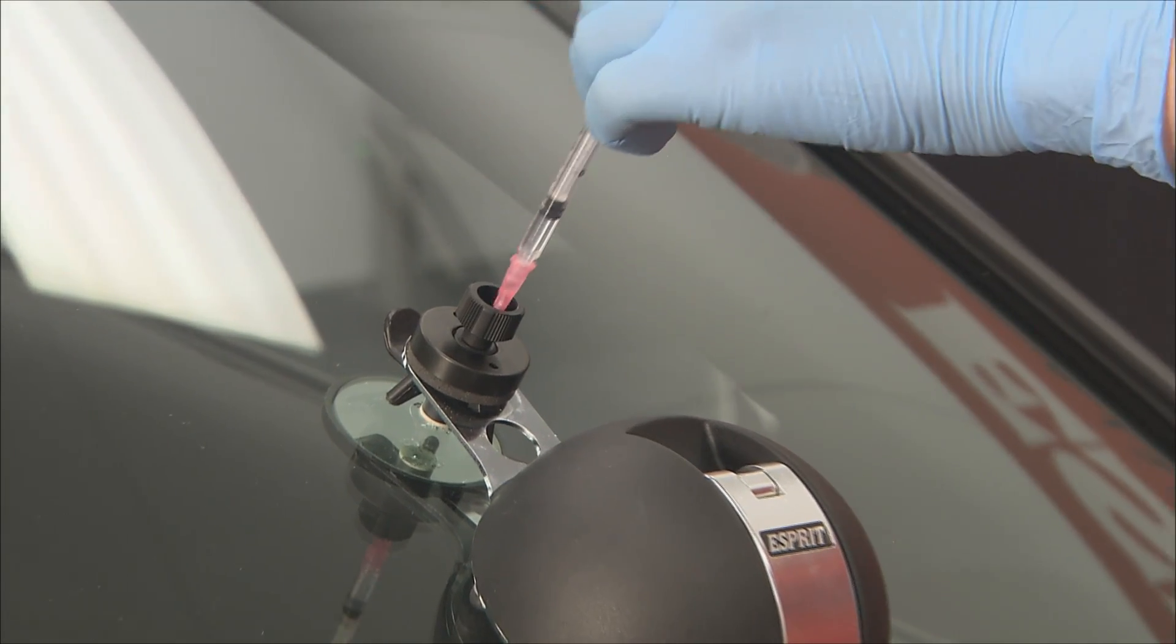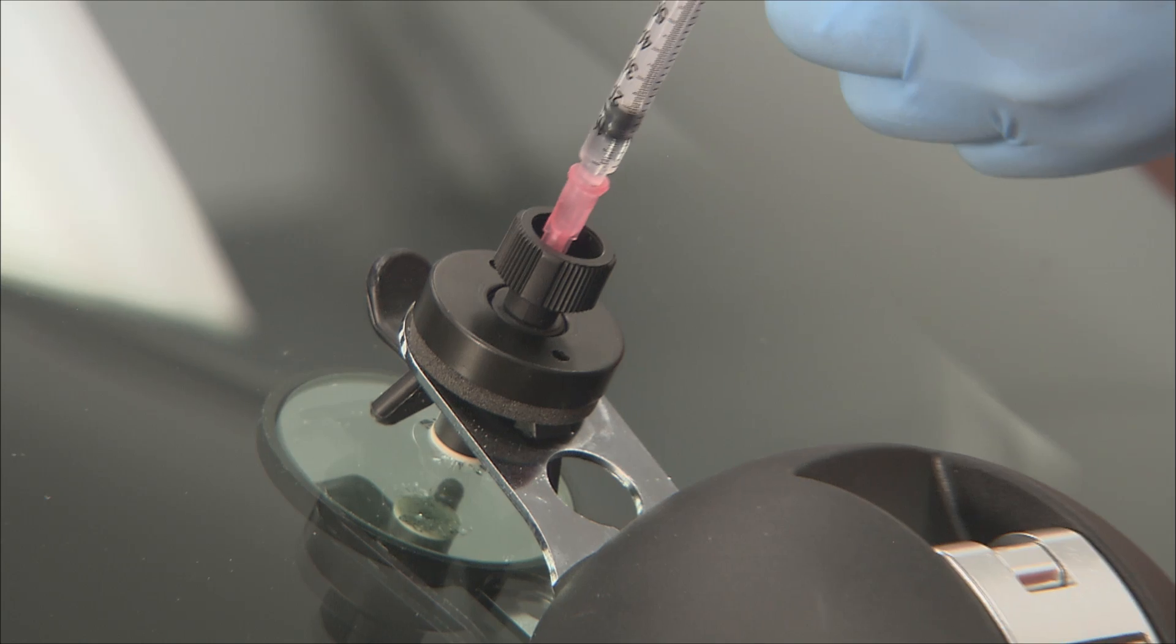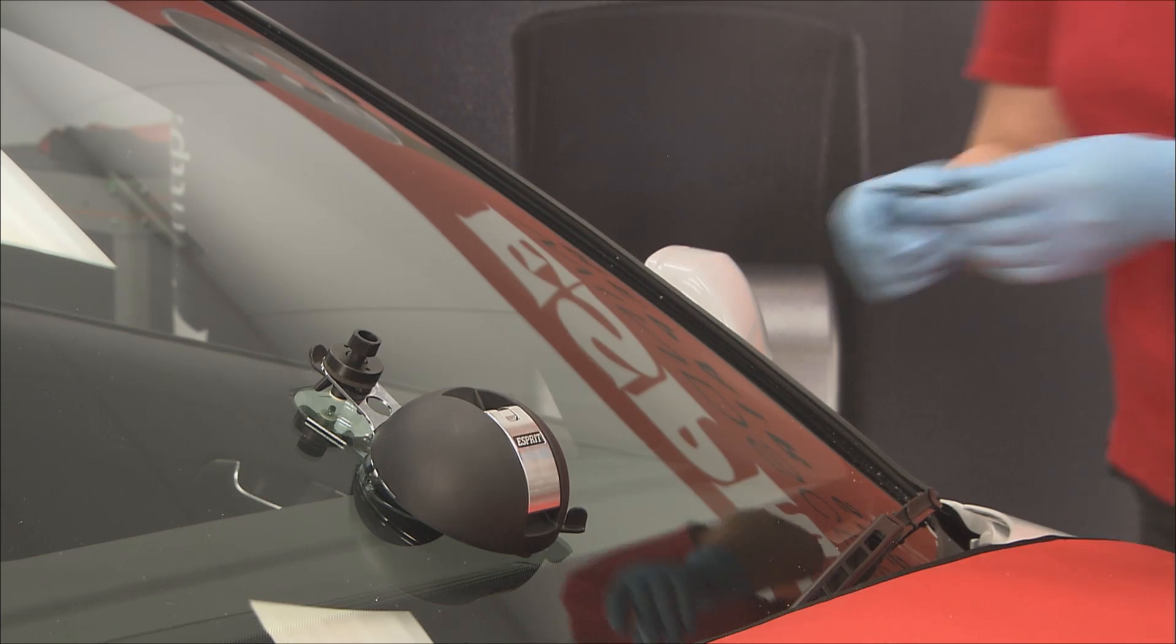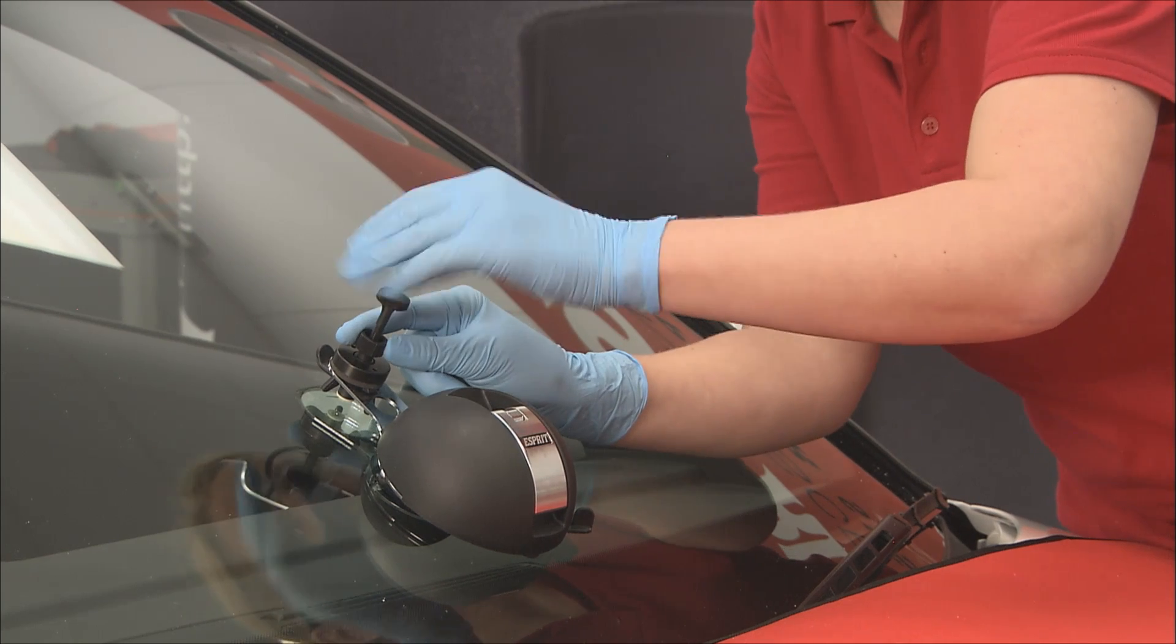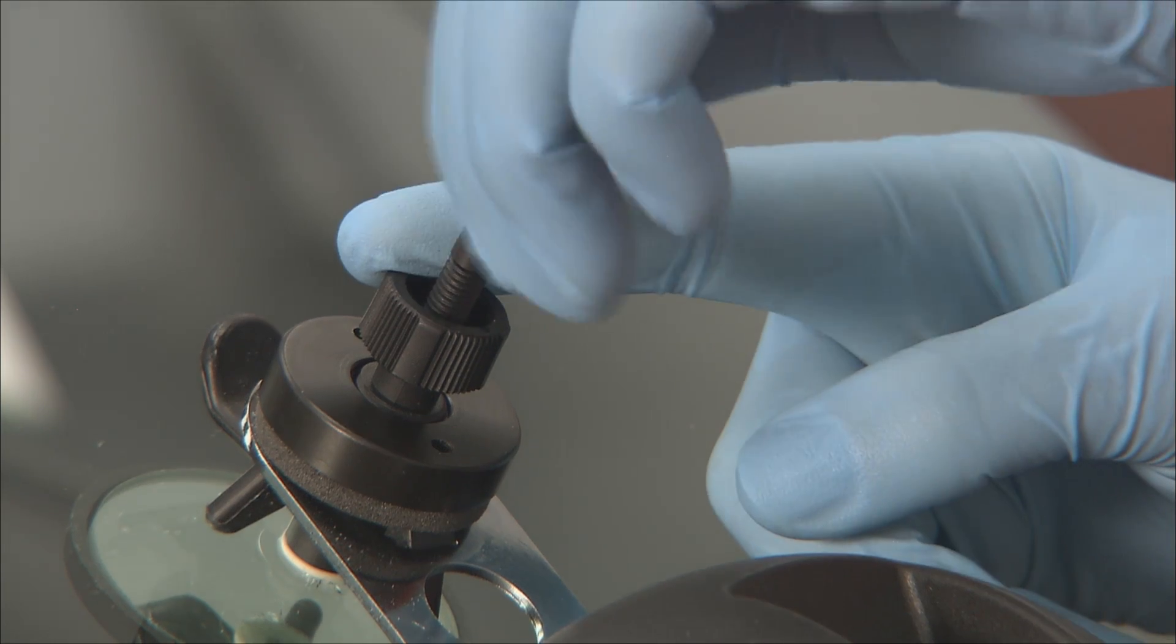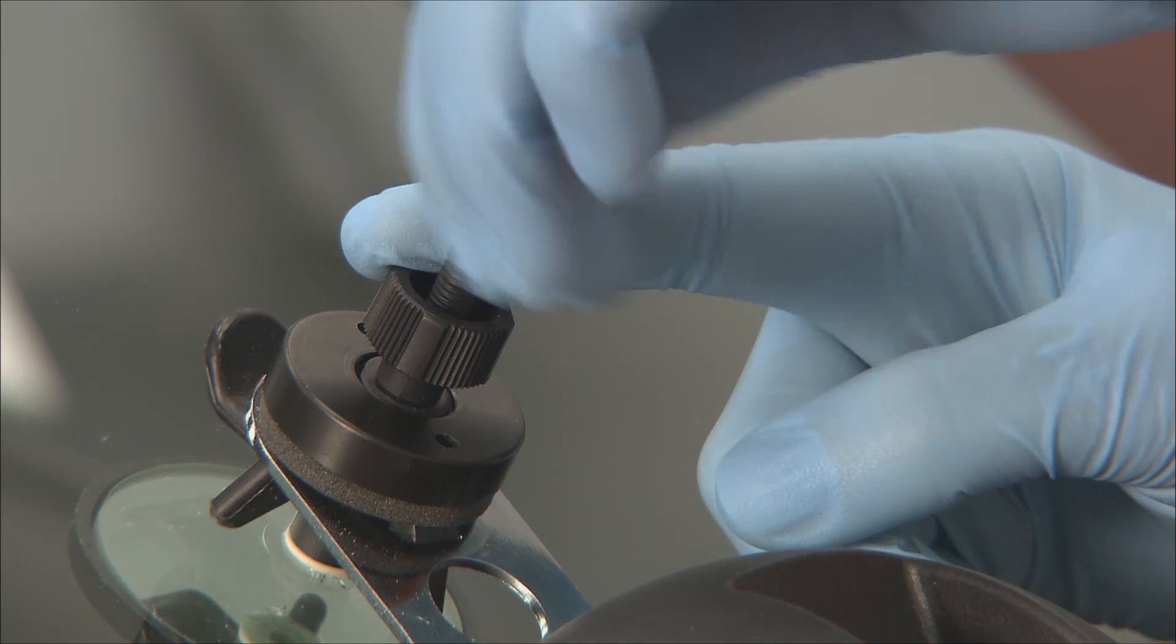The resin is then inserted into the injector. The plunger is screwed slowly into the injector, pushing the resin to the edges of the damage until a slight resistance is felt.